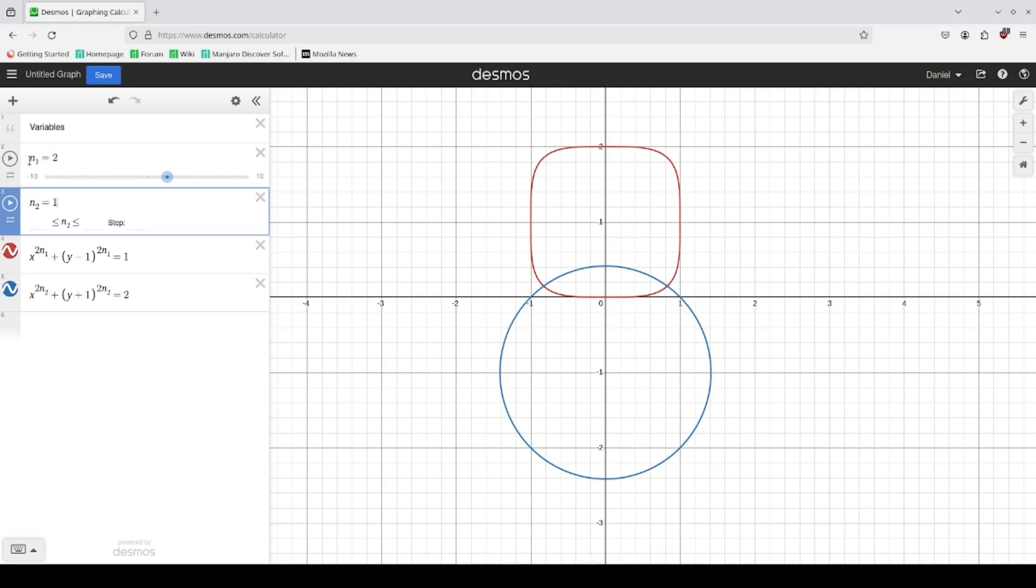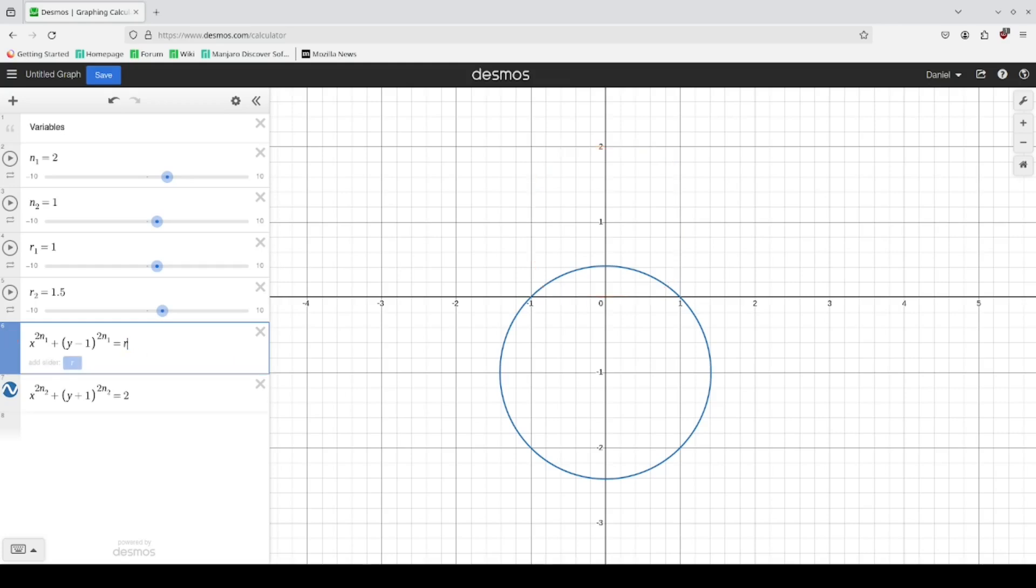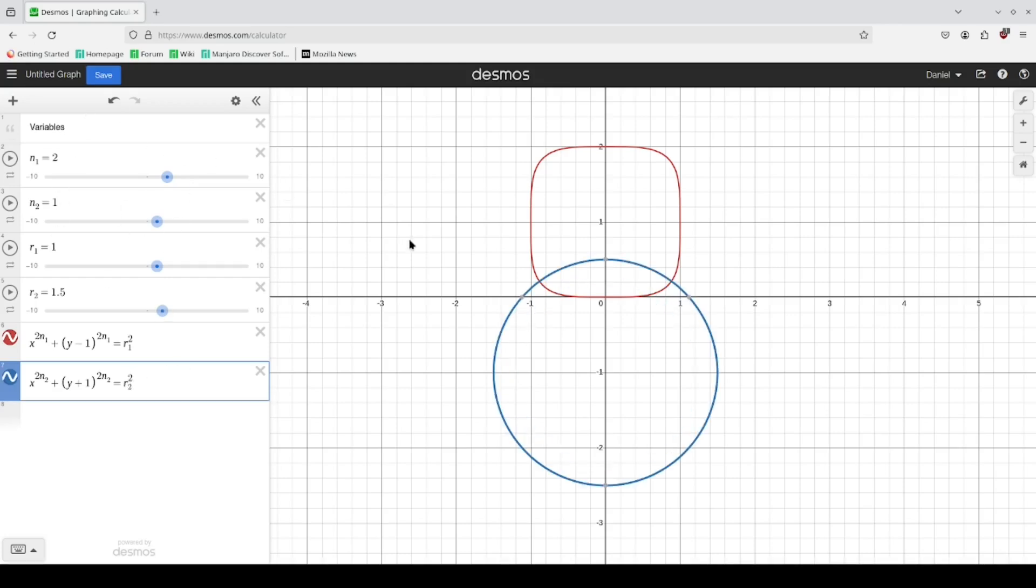There's two things I want to add. First one is the radius for each of the shapes. Let's make this bottom piece slightly bigger, so this would be r sub one squared and this would be r sub two squared.